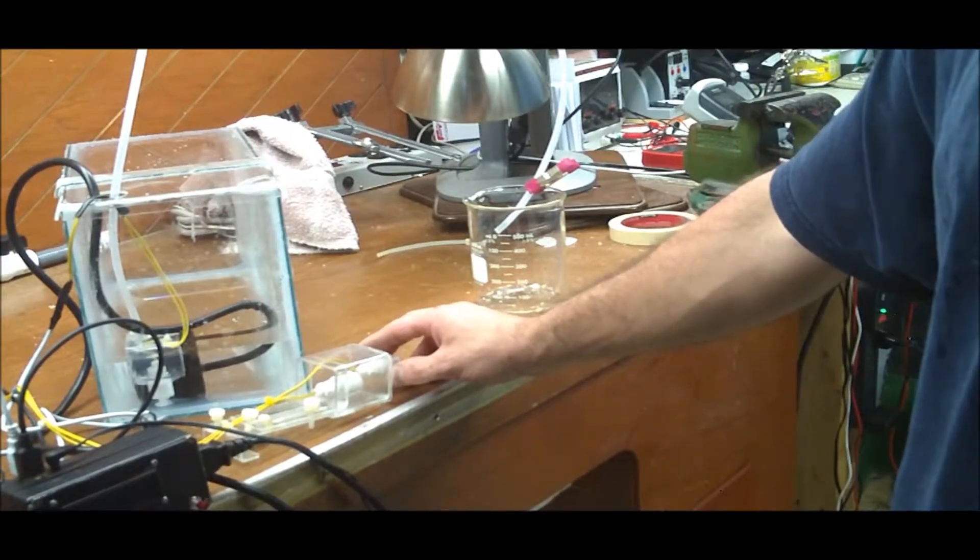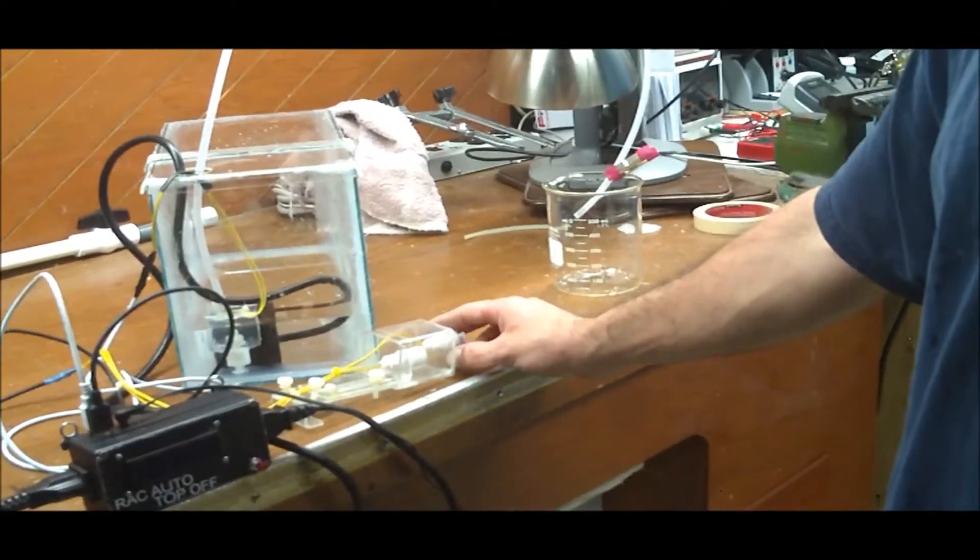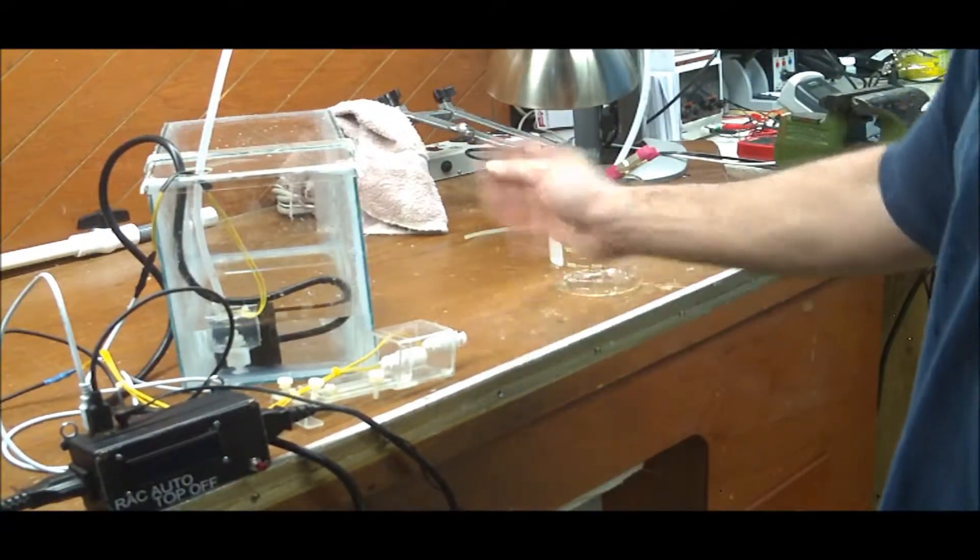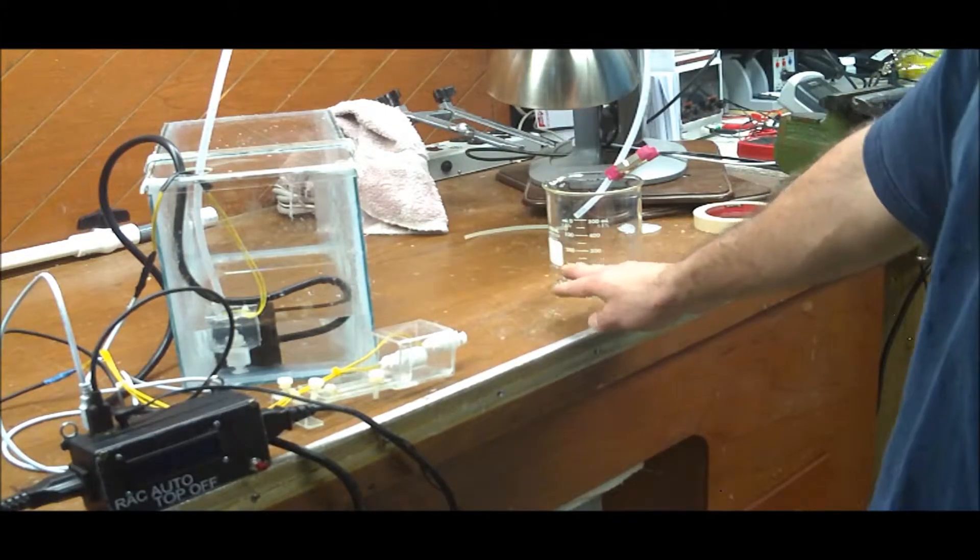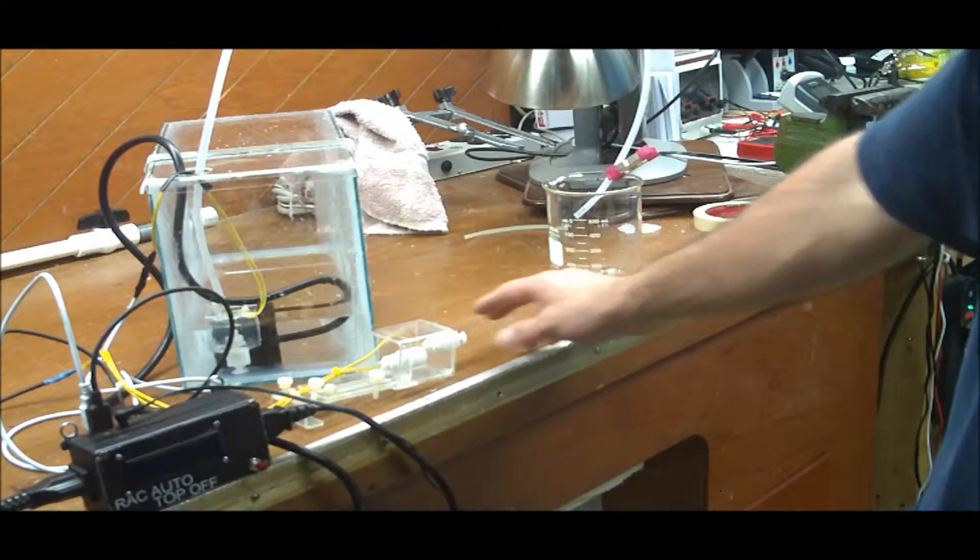So, if I pull this float switch down, it's actually going to kick on the ATO and it'll run for 20 seconds. It should be about a cup, which is about 237 milliliters.